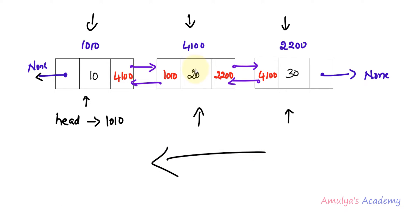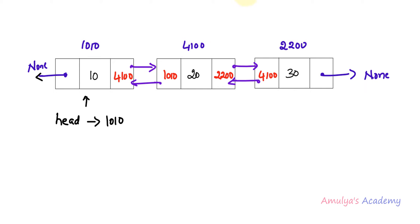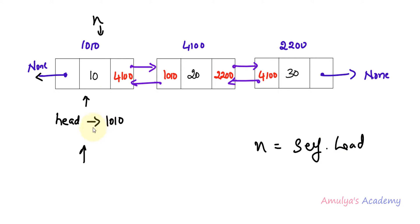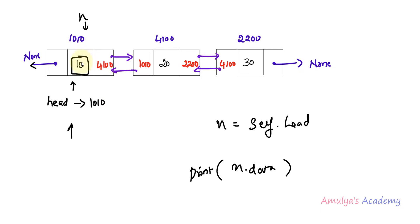In forward traversal, we start from the first node, print its data, go to the next node, print its data, and continue until we reach the last node. In backward traversal, we start from the last node and go toward the first node in reverse order — so we get 30, then 20, then 10. For forward traversal, first I take n equal to self.head, since head is the starting point, so n is the first node. Next I print n.data.